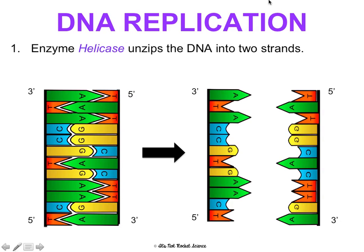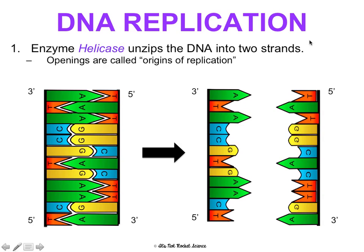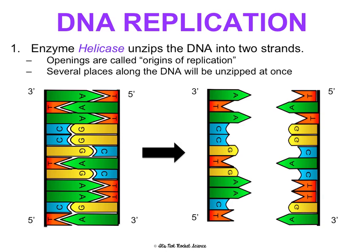I'm going to highlight enzymes in purple as we go through this process — they're really important and run the whole process. First, an enzyme called helicase unzips the DNA into two strands. Where it opens up is called the origin of replication. It doesn't just unzip from top to bottom — it unzips all along the DNA, and several places will be unzipped at once.